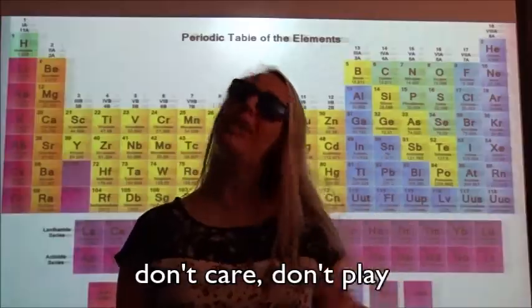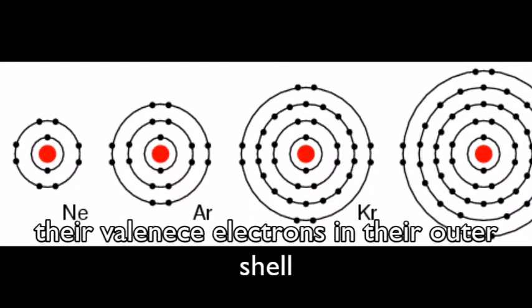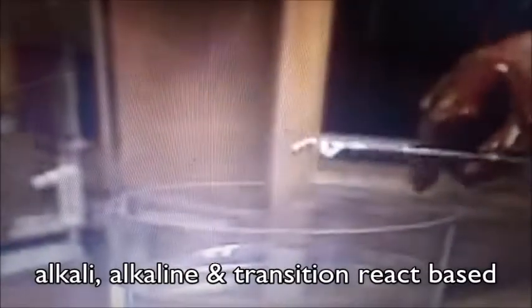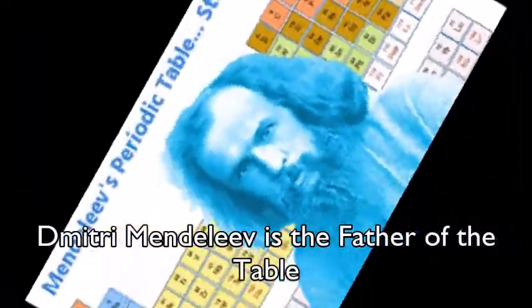The noble gases don't care, don't play. They don't like to donate their valence electrons in their outer shell. They don't react, attract, or repel. But alkali, alkaline, and transition metals react based on their element composition. Elements can't be broken down.